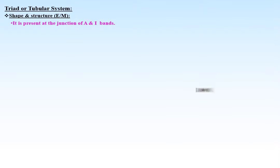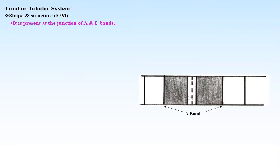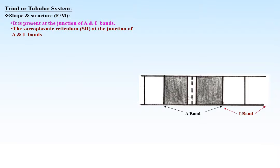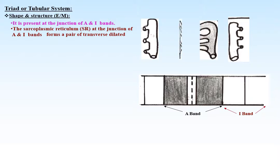Triad or tubular system — shape and structure by electron microscope: the triad is present at the junction of the A and I bands. The sarcoplasmic reticulum at the junction of A and I bands forms a pair of transverse dilated sarcotubules called terminal cisternae, which pass around each myofibril and are continuous with the cisternae of adjacent myofibrils.